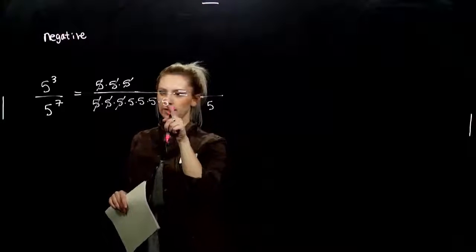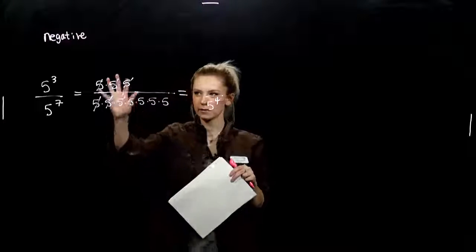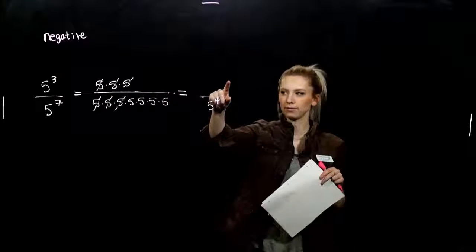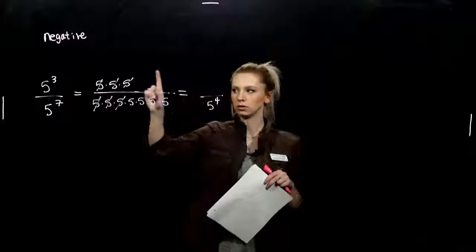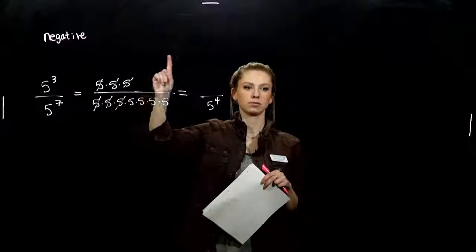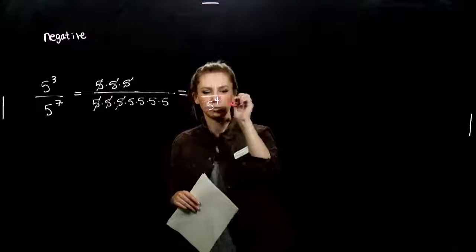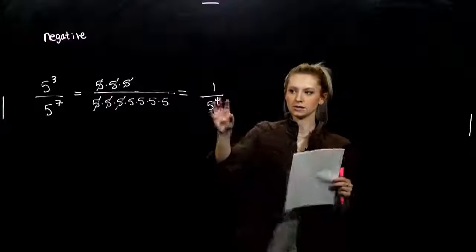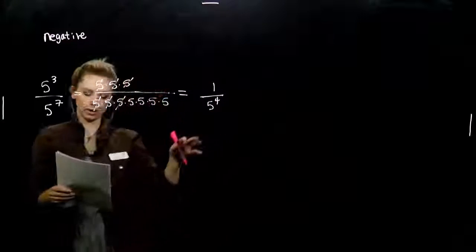So how many factors of 5 do I have? 1, 2, 3, 4. And what do I have up top? What's left? When I took 5 divided by 5, I've got 1, times 5 divided by 5, 1, times 1. So we have that placeholder up top. We need it to tell us this is down in the denominator, didn't magically move up top. So we can handle it in that way.